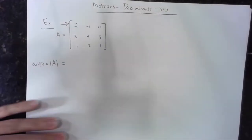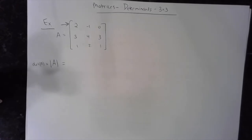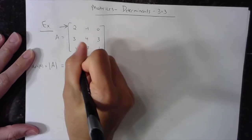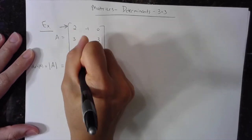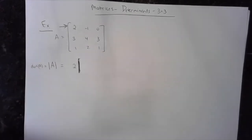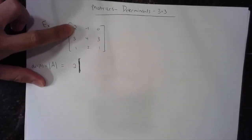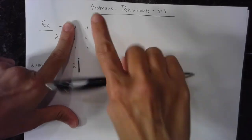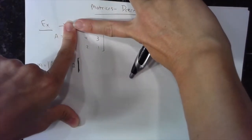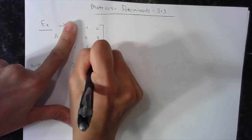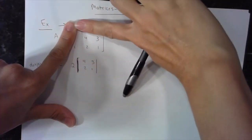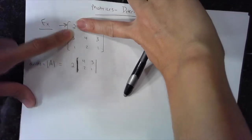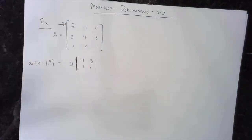So here's what we're going to do. We're going to go across the top row and start with the first element. I'm going to take that element and multiply by the determinant of the matrix that remains when I take this row and this column out. So when I write the first element, I ignore the column and the row that that element is in and look at the matrix that's left, which is a 2x2: 4, 3, 2, 1. And I'm going to take the determinant of that 2x2 matrix multiplied by what's called the cofactor.